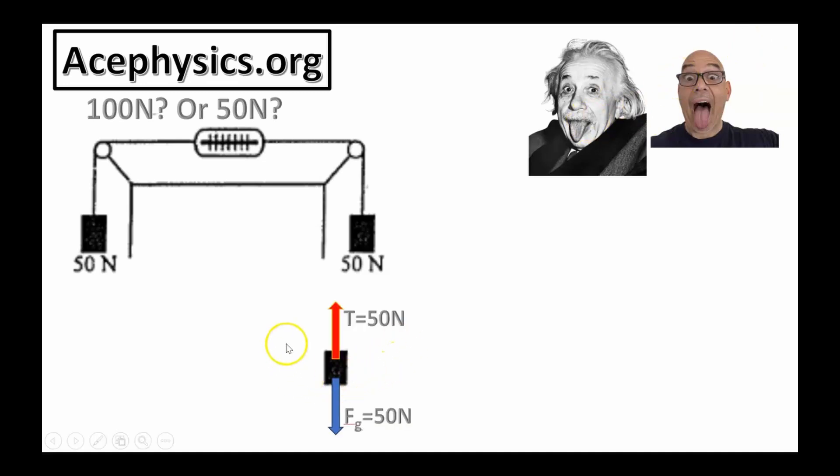Let's start by looking at the free body diagram of this mass. This mass is not moving. The force of gravity downward is 50 Newtons and the tension force upward is 50 Newtons. If the tension force upward were anything other than 50 Newtons, the mass would not be in equilibrium and it would be accelerating.